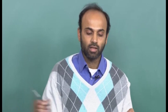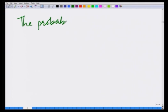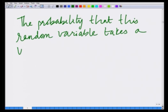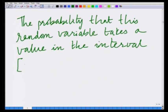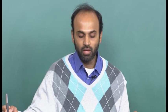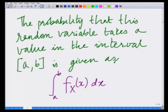The probability that it lies in an interval a comma b is given as the integral from a to b of f(x) dx. That is, the probability that the random variable X lies in the interval a to b is given by the integral from a to b of f(x) dx.